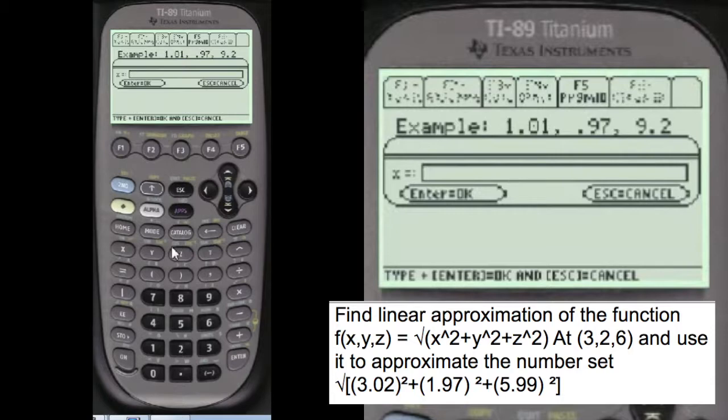And we're going to put in, you can see the example on the screen here. And so the alpha 3.02. These are the points where you're going to approximate at.